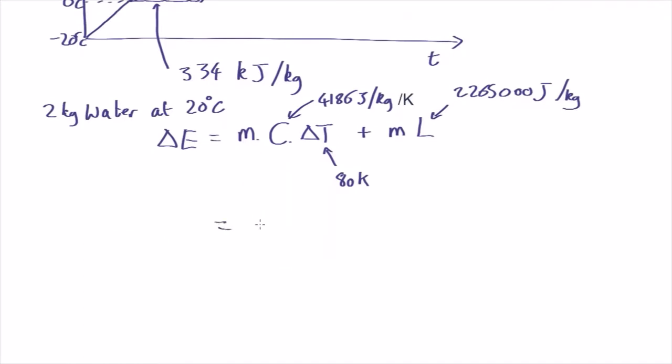So this equals the mass, two kilograms, times the specific heat capacity, 4186, times the change in temperature, 80, plus the mass, two kilograms, times the latent heat of vaporization, 2265000, which comes out as a whopping 5199760 joules. So about 5 megajoules.